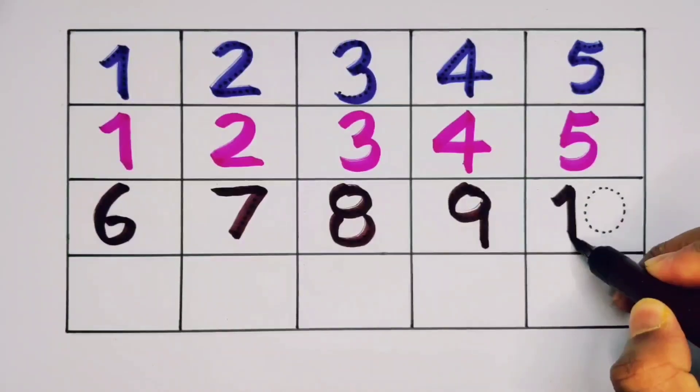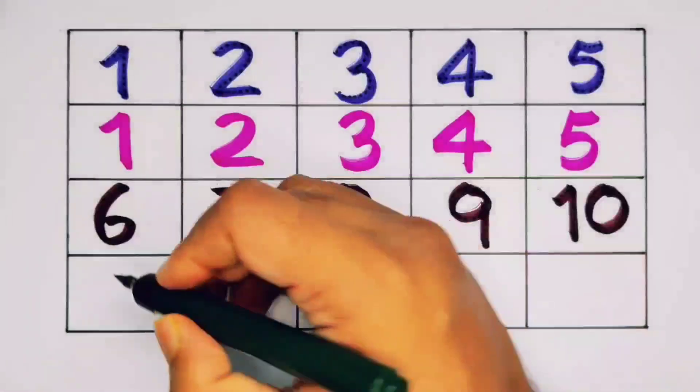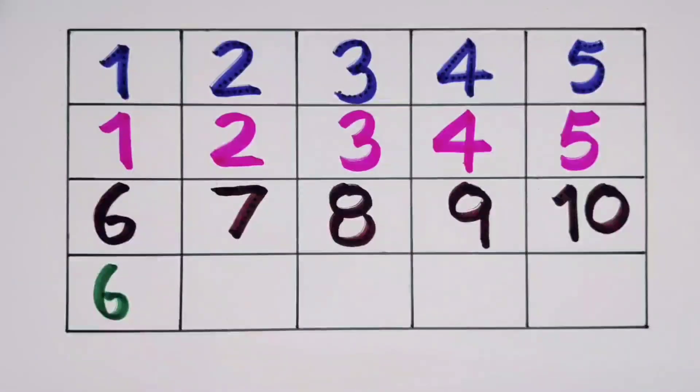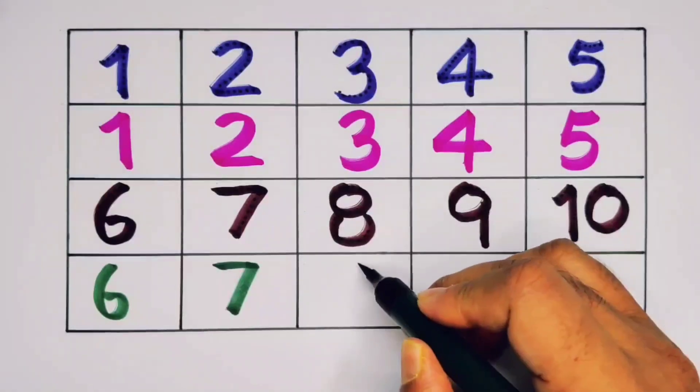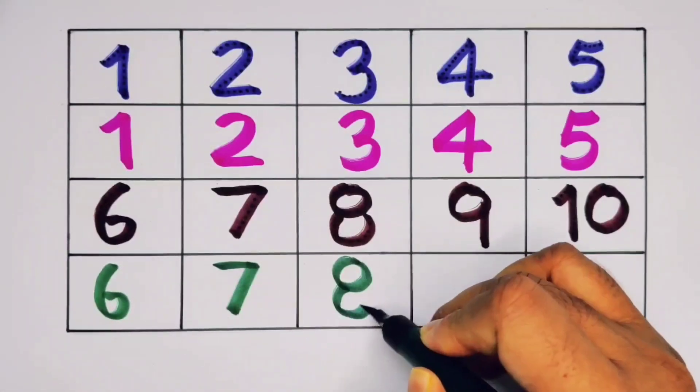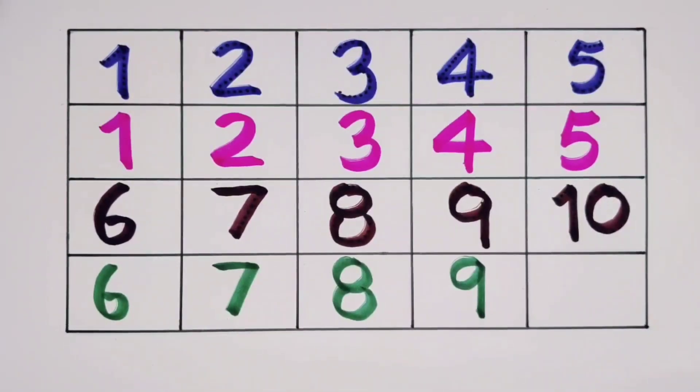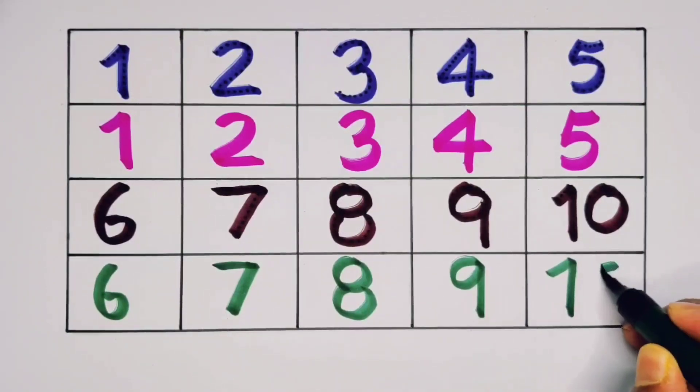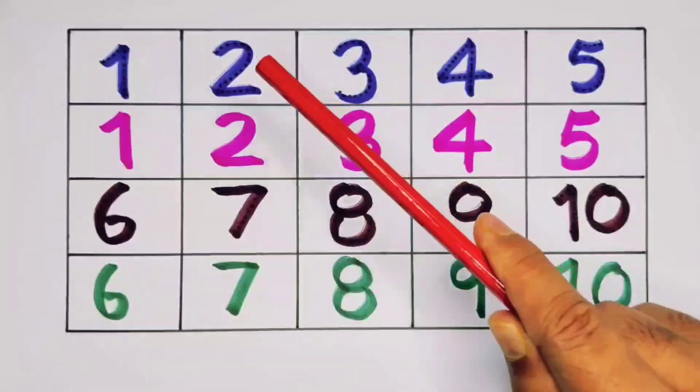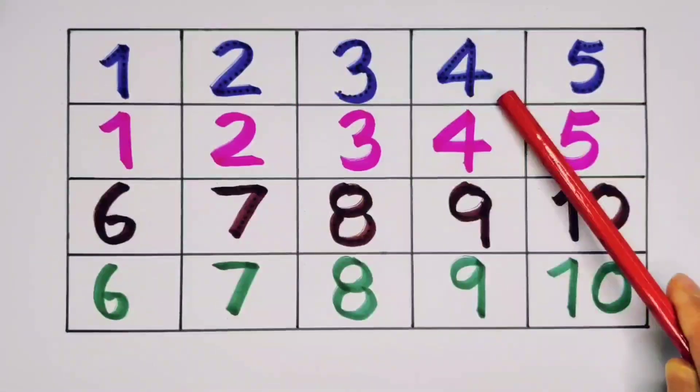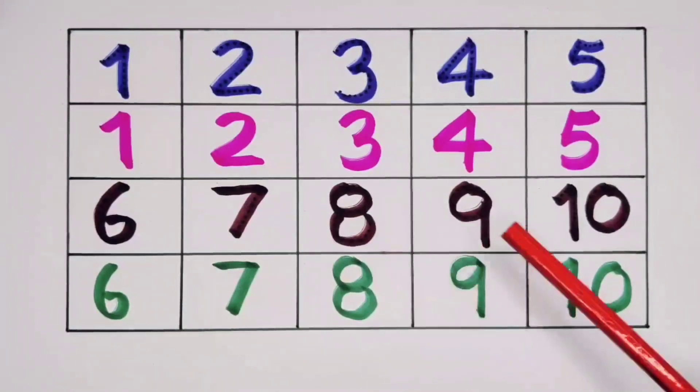One zero ten, number ten. We repeat: number six, seven number seven, eight number eight, nine number nine, nine and one zero ten, number ten. What we learned: we learned one, two, three, four, five, six, seven, eight, nine, and ten.